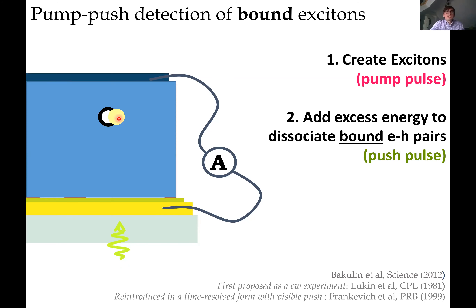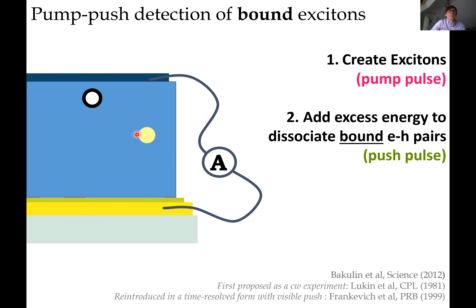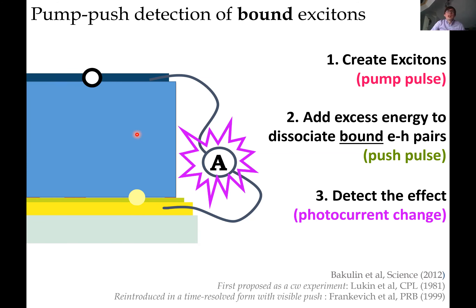Then we come with another pulse — an infrared pulse which is normally not absorbed by the material — but we choose a wavelength that will be absorbed by the excitonic state, promoting it from the excited state to a higher excited state. When this infrared photon gives extra energy to the bound excitonic state, that state may have a chance to split into electron and hole, and we can detect the current from this splitting. This technique only sees a signal if we have a bound state needing infrared light to break apart.